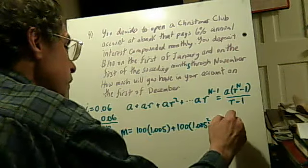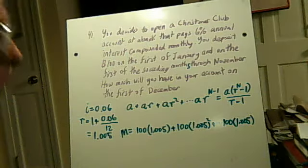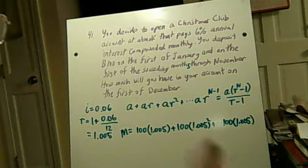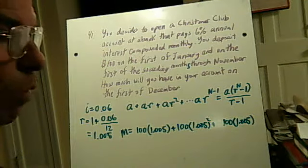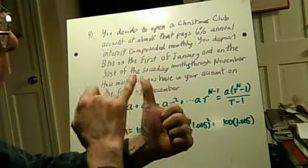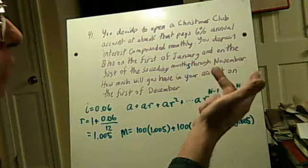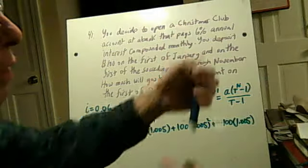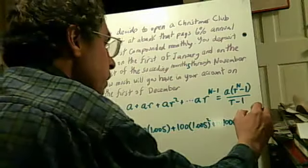Then you keep going until you get to the deposit you made in January. Now you have to find out how many times did that get compounded? How many months went by? February, March, April, May, June, July, August, September, October, November. December 1st, that's 11 months. So you have to take the 100, you have to multiply this by 11.